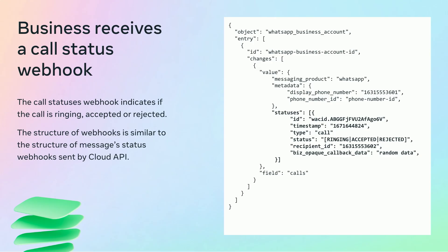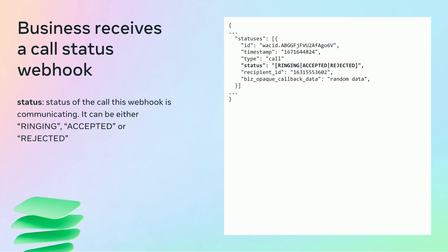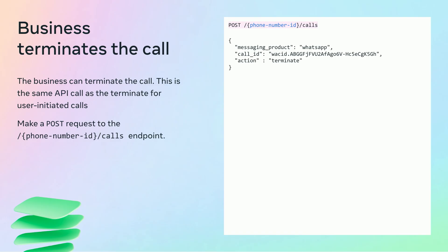The status webhooks are structured similarly to the message status webhooks sent by Cloud API. A status array within the value object contains the call's status information. The status parameter can be ringing (when the call starts ringing for the user), accepted (when the call is accepted by the user), or rejected (if the call was rejected). The business can then terminate the call by making a POST request to the slash phone_number_id slash calls endpoint, providing the call_id as the id parameter and setting the action parameter to terminate.